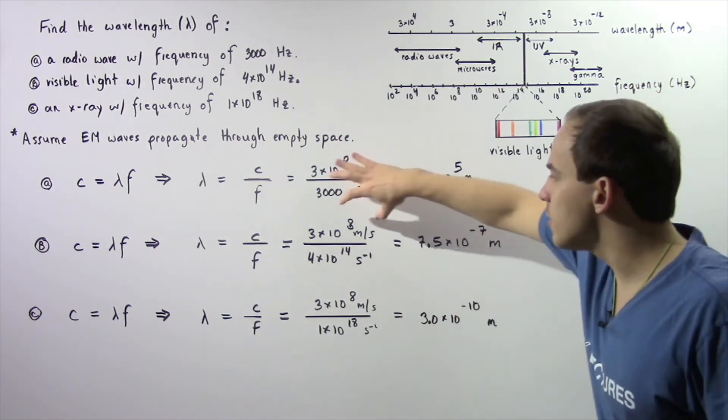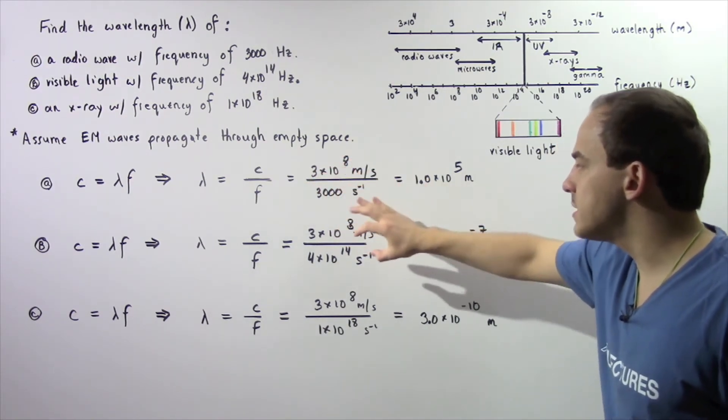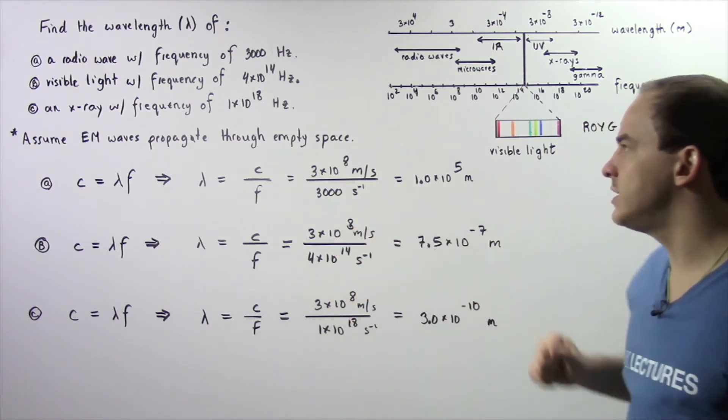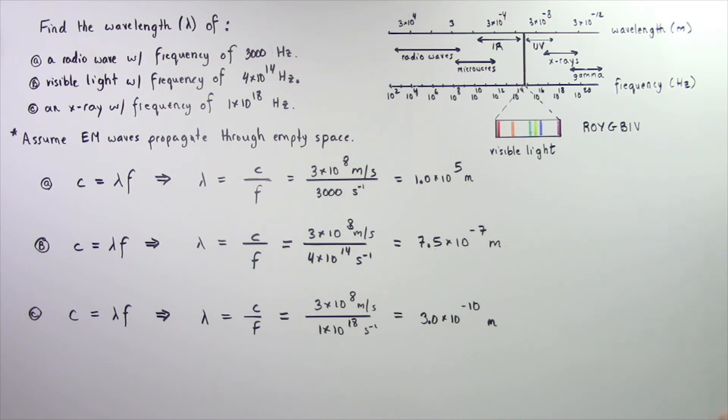Now in part B, we follow the same exact procedure. 3 times 10 to the 8 m per second divided by 4 times 10 to the 14 Hz. The seconds cancel and we're left with 7.5 times 10 to the negative 7 m.